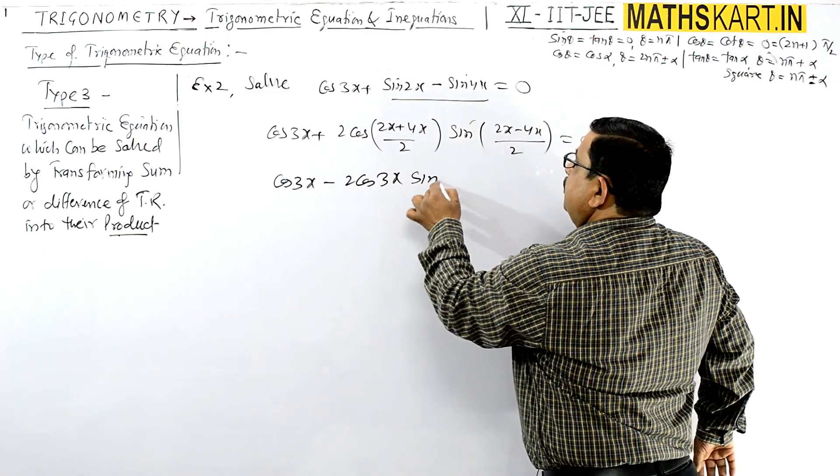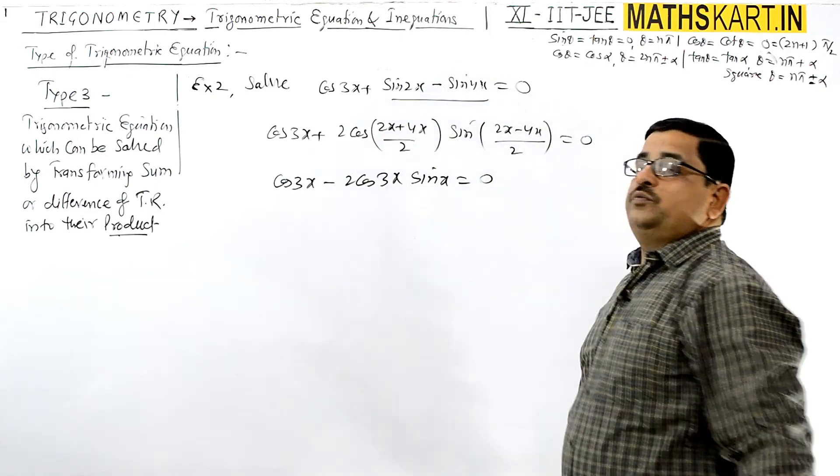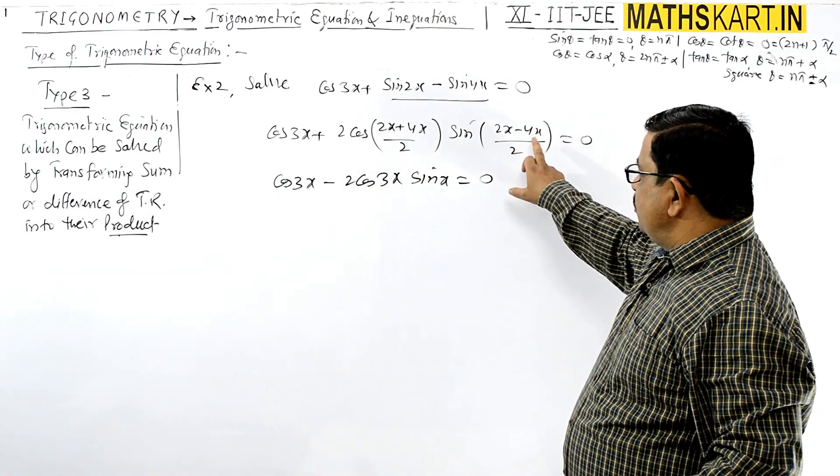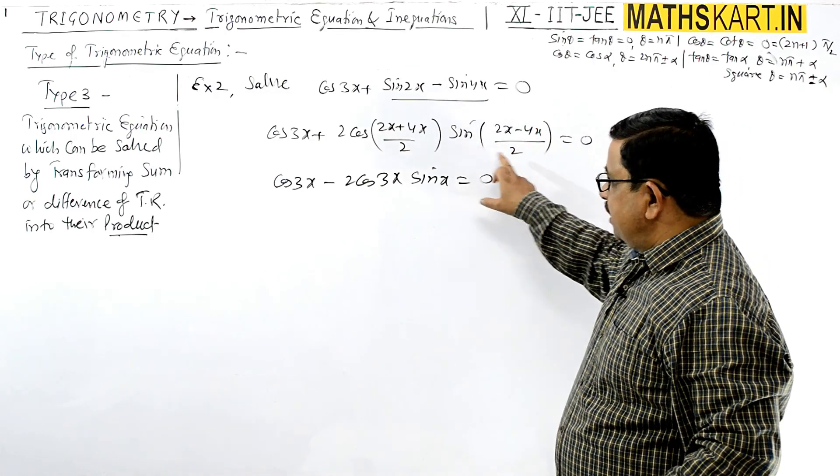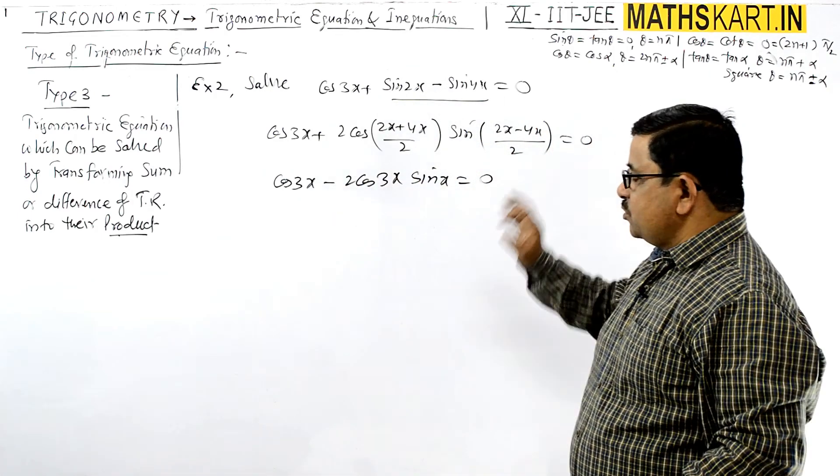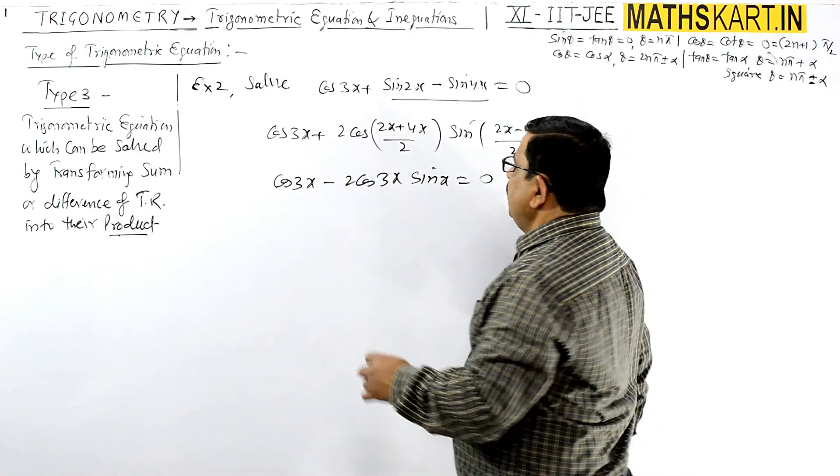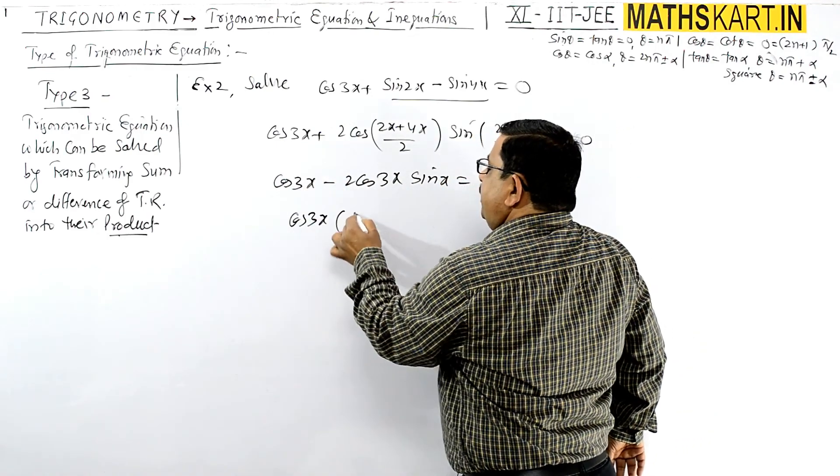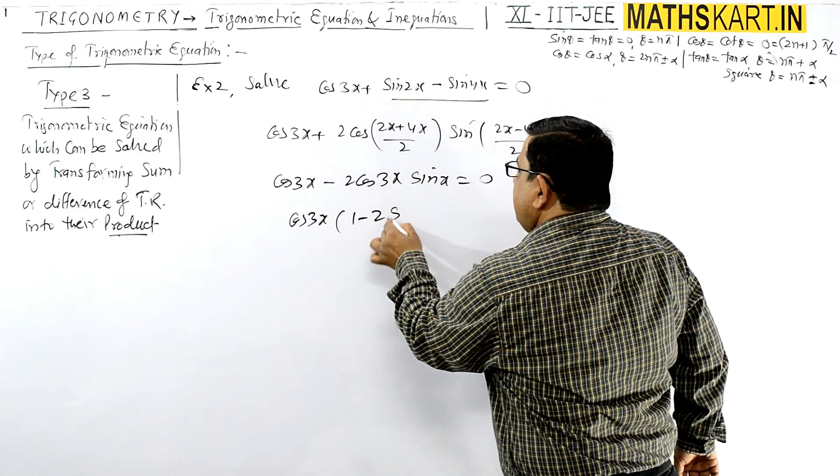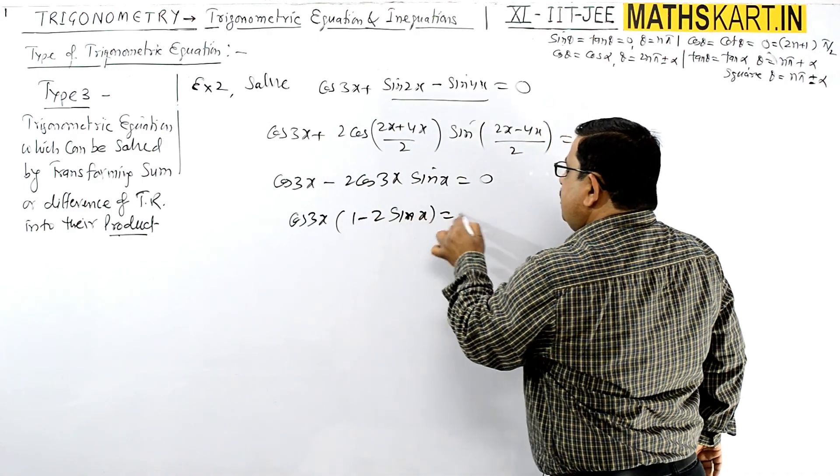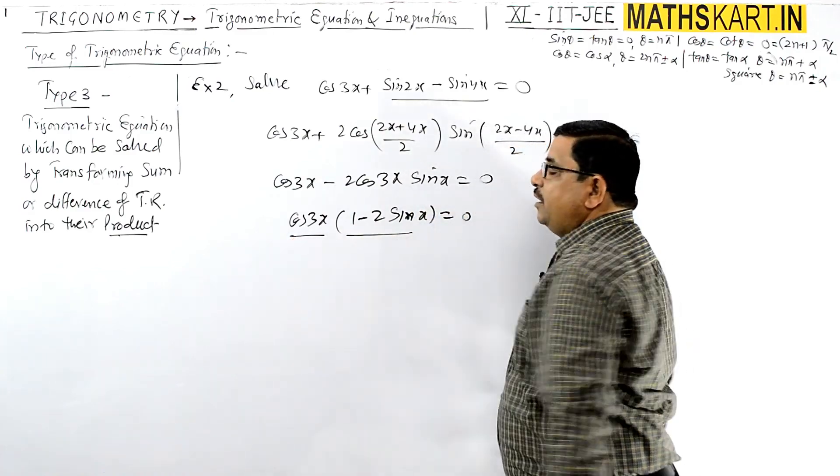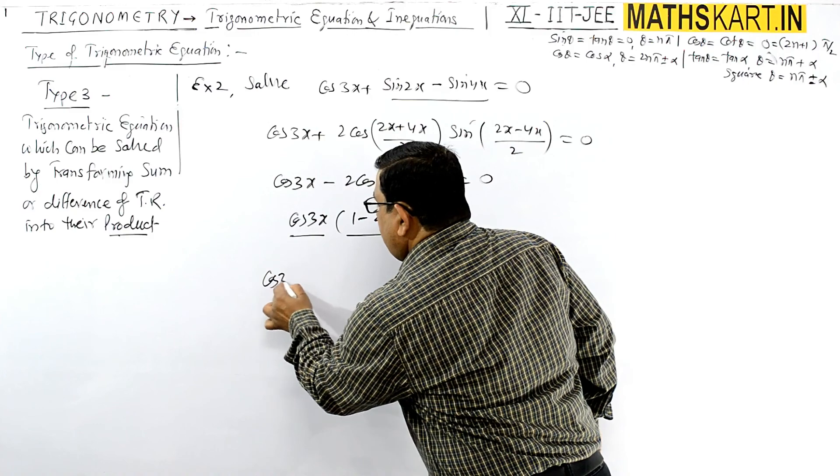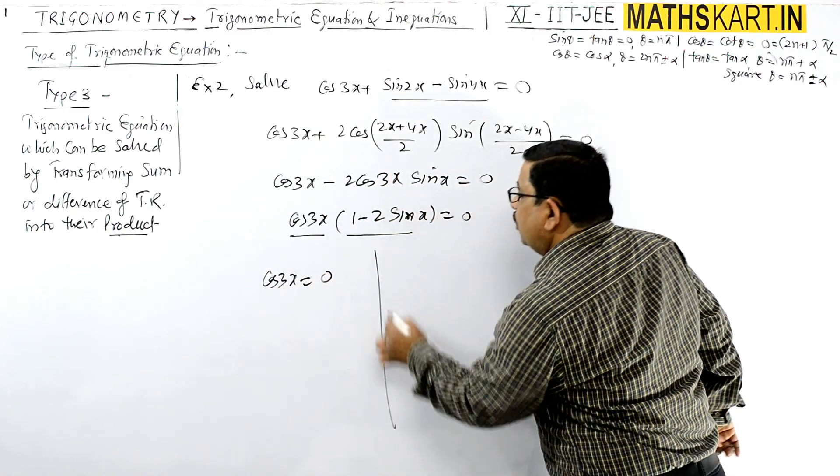Since sin(-θ) = -sin θ, this becomes cos 3x - 2 cos 3x sin x = 0. Now take out cos 3x common: cos 3x(1 - 2 sin x) = 0.